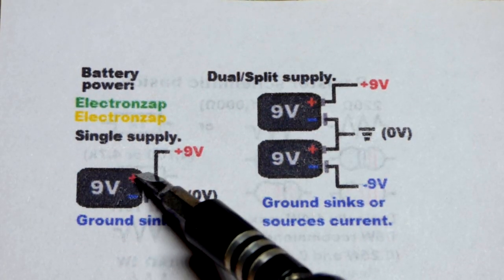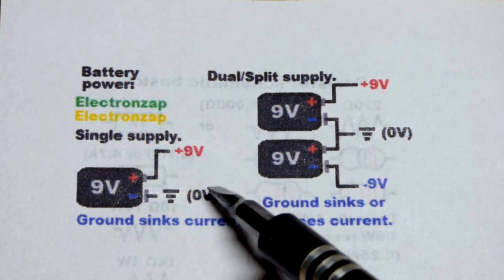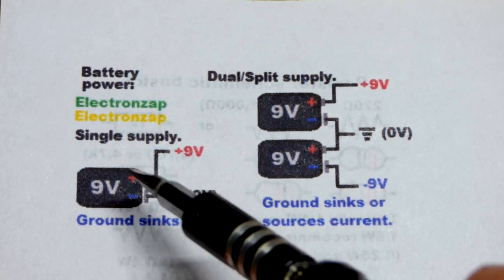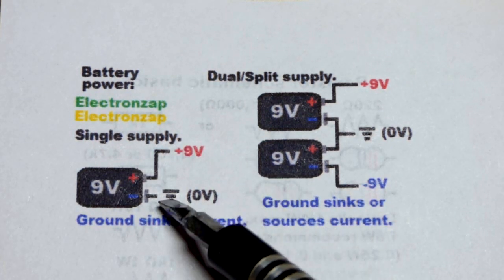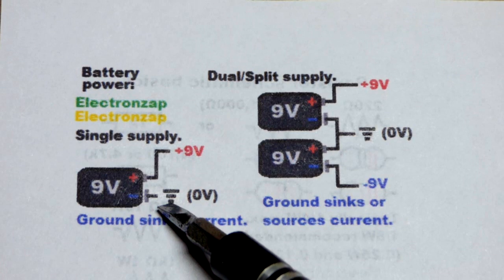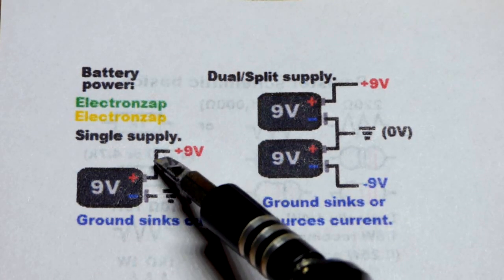They used to think that current flowed from positive into a negative. Now we know there's actually electrons that flow from negative to positive, but they used to think it flowed from positive to negative. They came up with this system, and it's still what we do to visualize current flowing through a circuit.